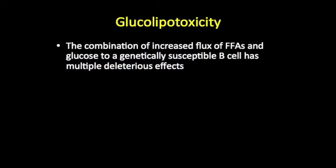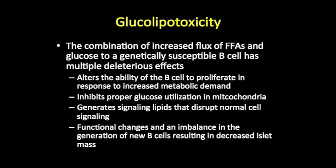This is called glucolipotoxicity. The thought is that it is the combined increased flux of free fatty acids and increased flux of glucose into the beta cell that has detrimental consequences. If you chronically overeat, there are always going to be nutrients going across your beta cell — it's going to have to work really hard. This combined increase of two nutrients, which can only be metabolized in the mitochondria, really causes a change in the selectivity of nutrients once they enter the cell.